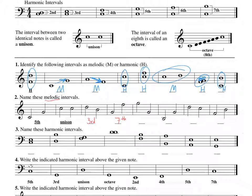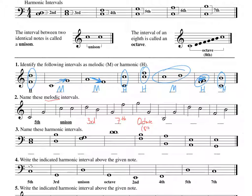The next one we have, we do have G to G. You can count high to low or low to high: one, two, three, four, five, six, seven, eight. And if it's the same note, it's going to be an octave or an eighth. So in this case I want you to write octave. We could put eighth under it just so that we understand it.